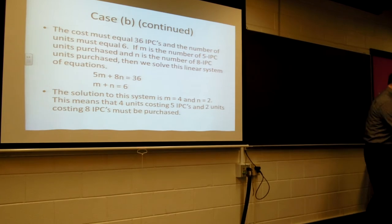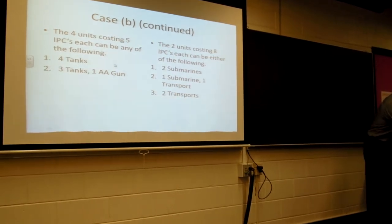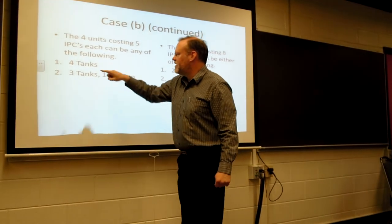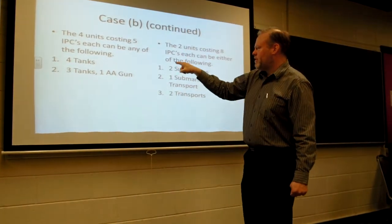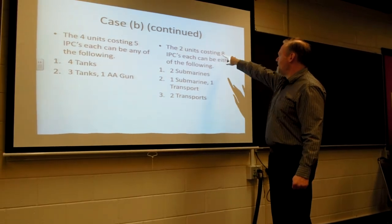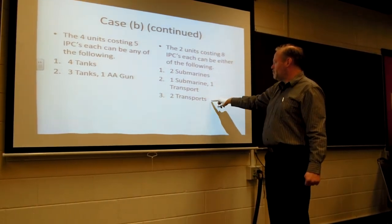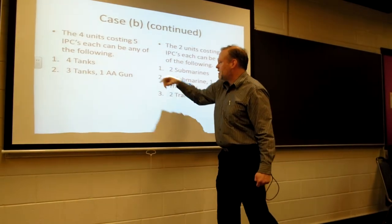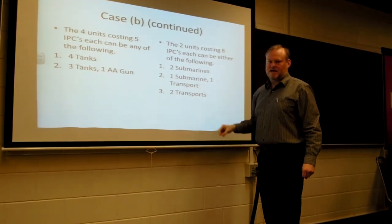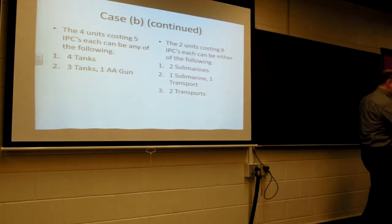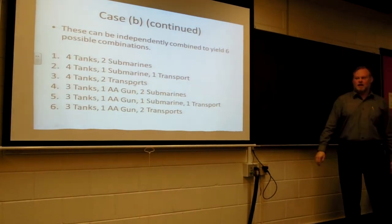So in the next slide I'm going to show you the four units that you can purchase for a price of five. You can buy four tanks or three tanks and one anti-aircraft. The two units costing eight, you can buy two submarines or two transports or one of each. These can be done independently, giving you a grand total of six possibilities. The six combinations are now listed on this slide.